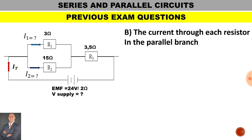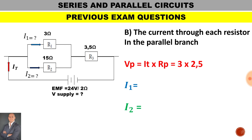Now to calculate the current through each resistor in the parallel branch. Before we can calculate I1 and I2, we first need the voltage across the parallel branch. The total current is 3 amps and the resistance of the parallel branch is 2.5 ohms. Therefore, the volt drop across the parallel branch is 7.5 volts.